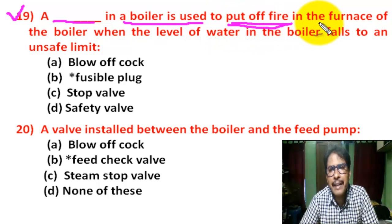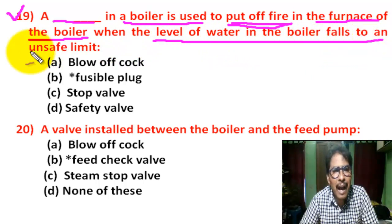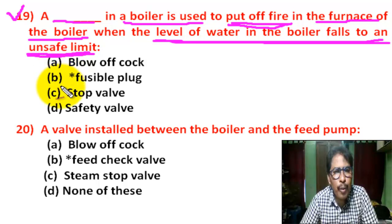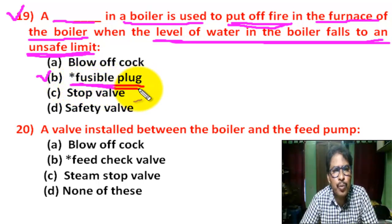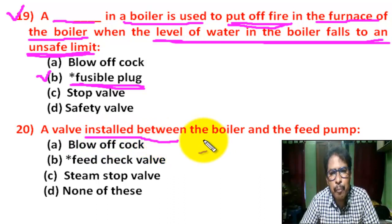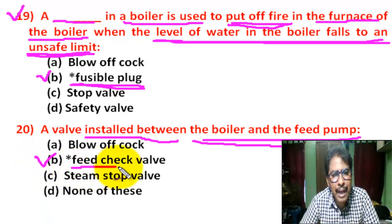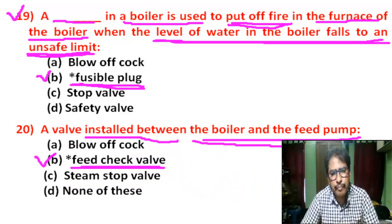Question number 19: A fusible plug in a boiler is used to put out the fire in the furnace of the boiler when the level of water falls to an unsafe limit. Correct answer is B: fusible plug. Question number 20: A valve installed between the boiler and feed pump. Correct answer is B: feed check valve.